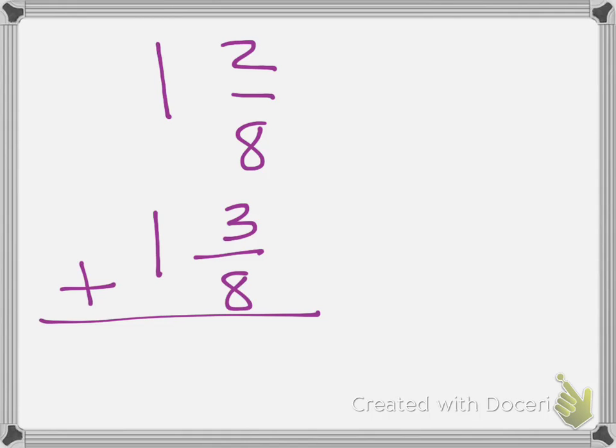I'm going to add my 2 eighths plus 3 eighths equals 5 eighths, and then add my whole, which is 1 and 1 equals 2. So my final answer would be 2 and 5 eighths. It does not need to be simplified, and so I can move on.